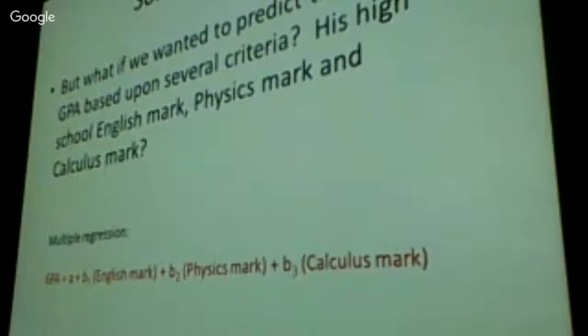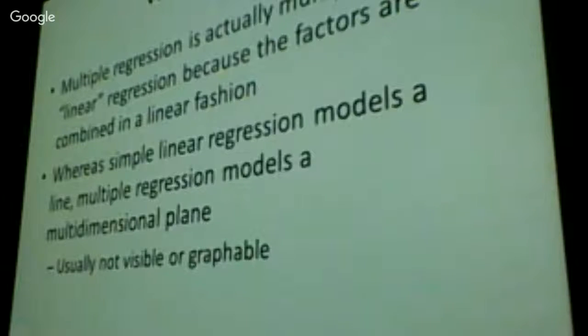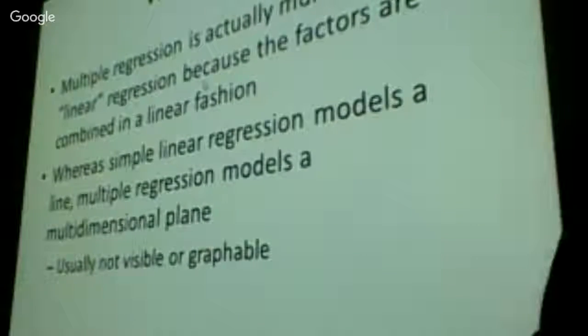So you have a multiple regression, you call this. So here we have just the English mark. You have English plus the physics mark plus the calculus mark. Look at this relationship. It's not a straight line anymore because we have one, two, three independent variables. How do I graph three independent variables? I can't. I can graph two independent variables on three different axes, X, Y, and Z. Once I get one more axis into the realm of multi-dimensions, the mind starts to work.